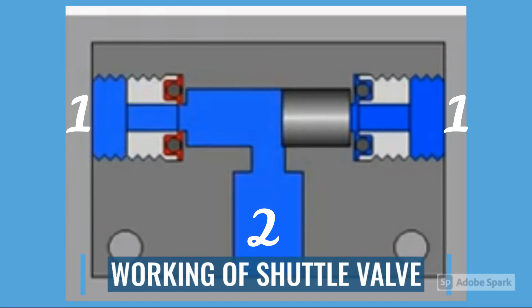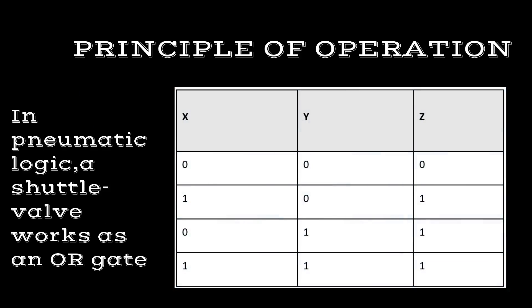In this way, two different sources can provide pressure without any backflow from one source to the other. In pneumatic logic, a shuttle valve works as an OR gate.